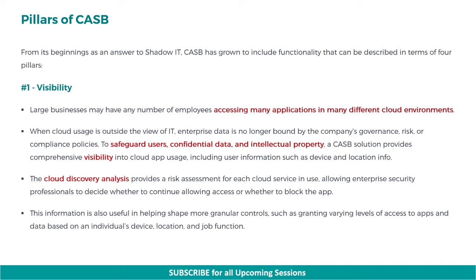Large businesses may have any number of employees accessing many applications in many different cloud environments. When cloud usage is outside the view of IT, enterprise data is no longer bound by the company's governance, risk, or compliance policies. To safeguard users, confidential data, and intellectual property, a CASB solution provides comprehensive visibility into cloud app usage, including user information such as device and location info. The cloud discovery analysis provides a risk assessment for each cloud service in use, allowing enterprise security professionals to decide whether to continue allowing access to the cloud or whether to block the app. This information is also useful in helping shape more granular controls, such as granting varying levels of access to apps and data based on an individual's device, location, and job function.